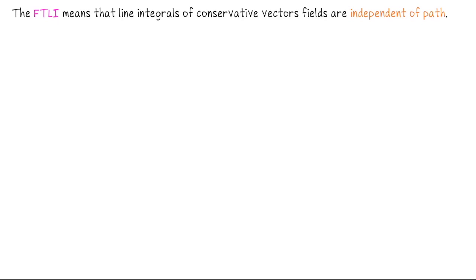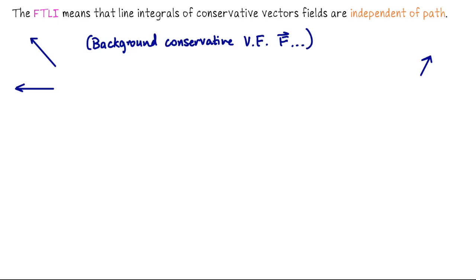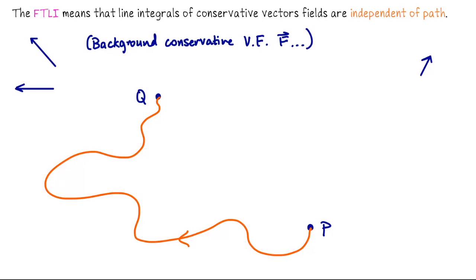The fundamental theorem of line integration tells us that the line integrals of conservative vector fields are what we call independent of path. Imagine we have some background conservative vector field capital F, and we take two points in this domain P and Q. If I want to compute the line integral of this vector field along some complicated path from P to Q, that could be a nightmare to parametrize.